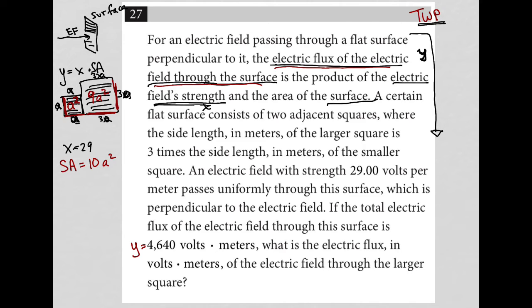What is the electric flux? Well, what do we know? So I know this equation here. Y equals X times SA. So I can say, well, that means Y equals 29 times 10A squared. But the question tells me that Y is 4640. So I can write that as 4640 equals 29 times 10A squared. Simplifying that to 4640 equals 290 A squared.